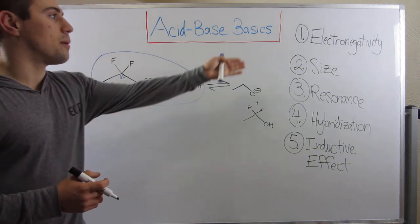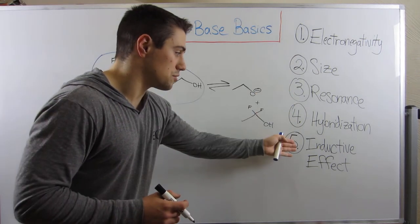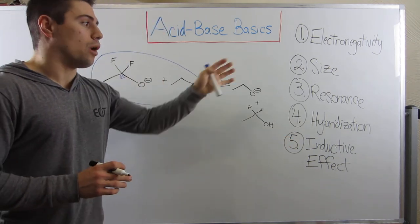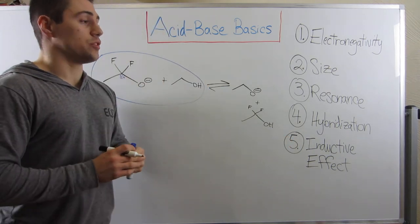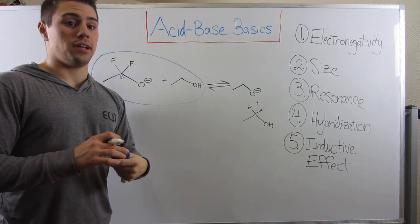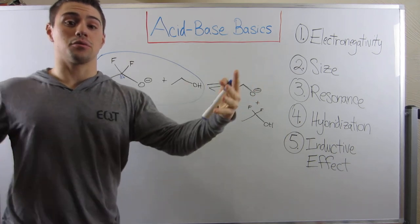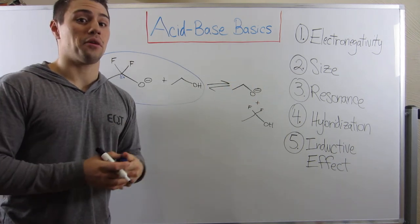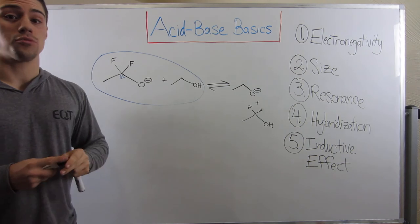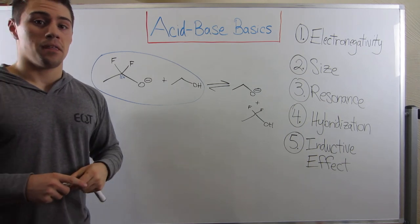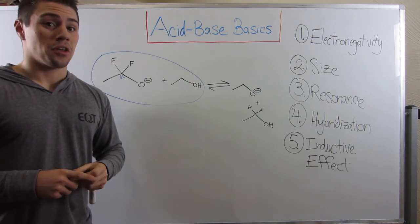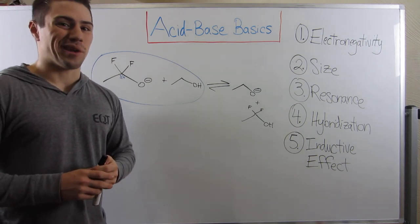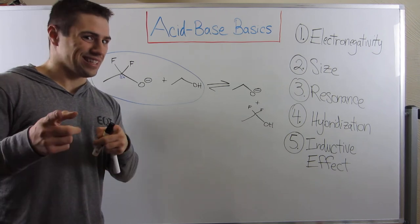As long as you can remember these five rules — electronegativity, size, resonance, hybridization, and inductive effect — whenever you look at an acid-base equilibria, one of these governing principles will help you pick which side is favored or identify who can handle the negative charge more effectively. We have one more video on Gen Chem Boot Camp and then on to O Chem. See you later.